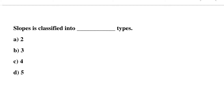The first question: slopes are classified into how many types? Option A: 2, Option B: 3, Option C: 4, Option D: 5. The correct answer is Option A, 2 — that is finite slope and infinite slope.